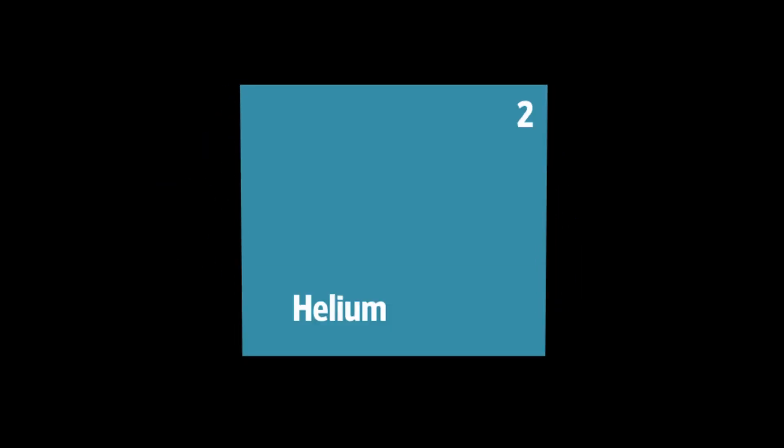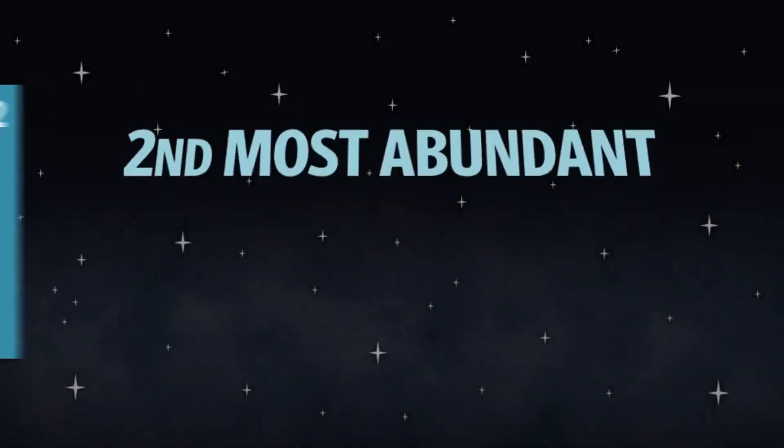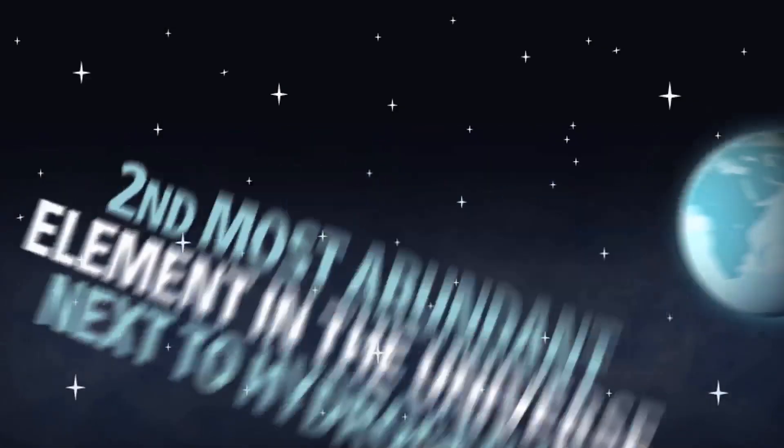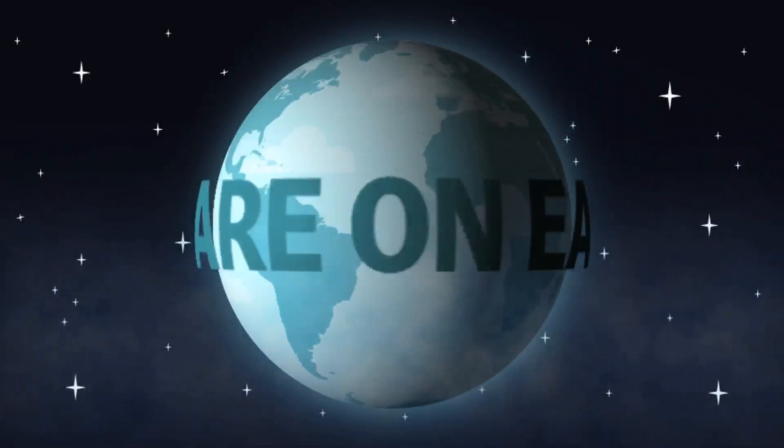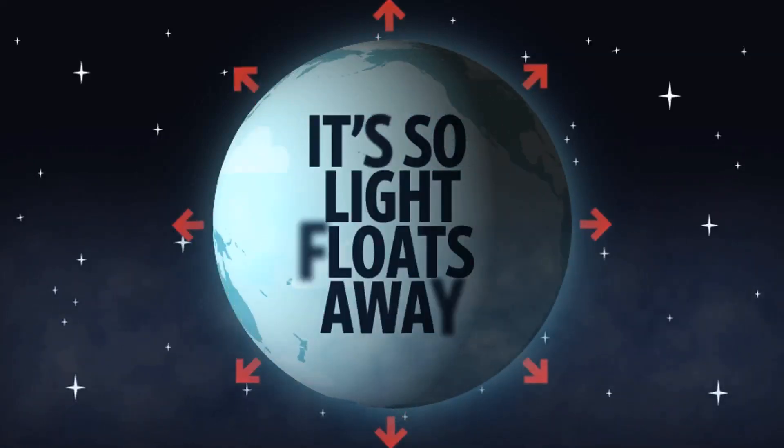Helium is a colorless, odorless, tasteless, non-toxic gas represented by the symbol HE. It's the second most abundant element in the universe next to hydrogen, but it's rare on Earth. In fact, there really isn't any in the atmosphere because it's so light it just floats away.